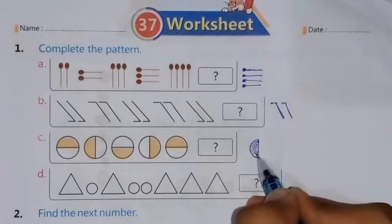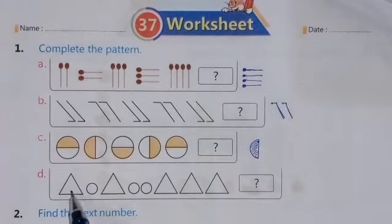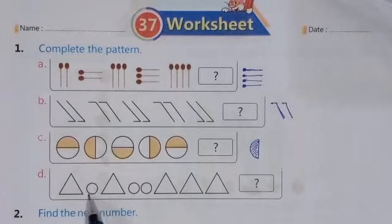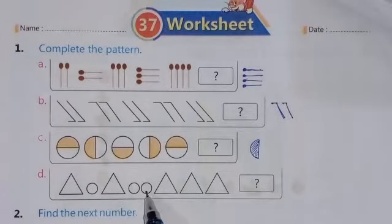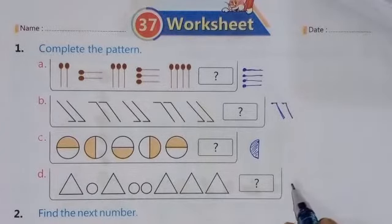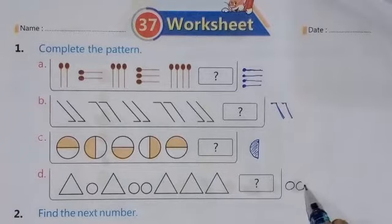And the last one: triangle circle, triangle two circles, three triangles three circles. Okay students? Question first completed.